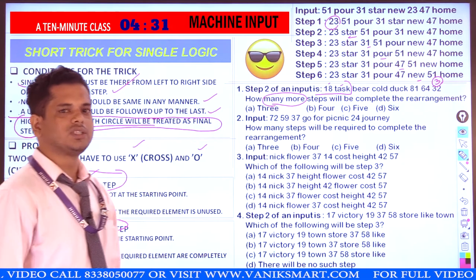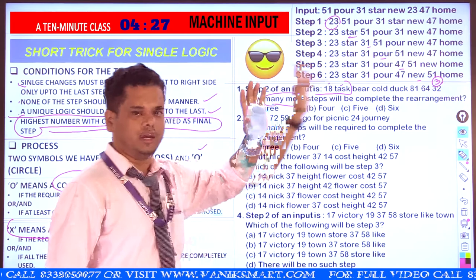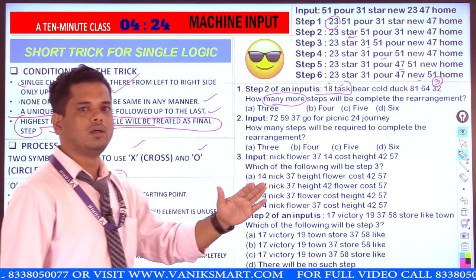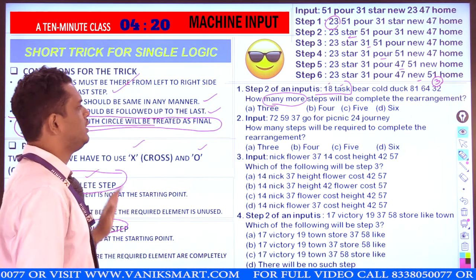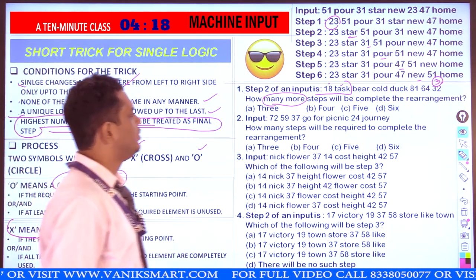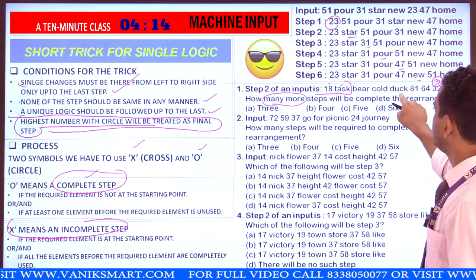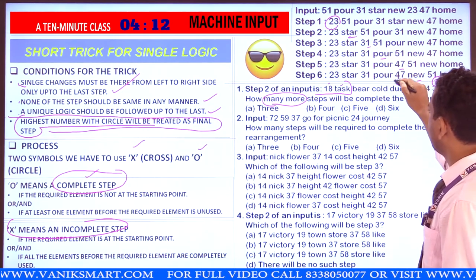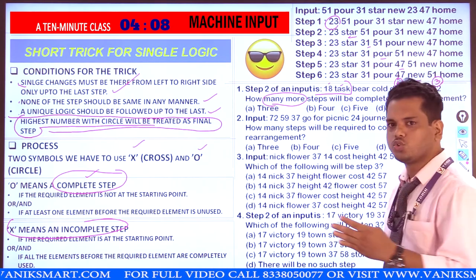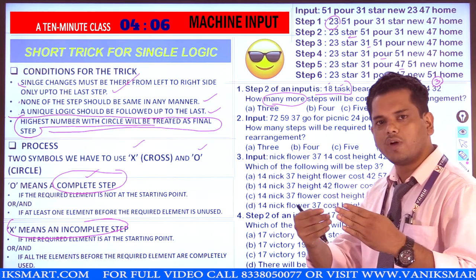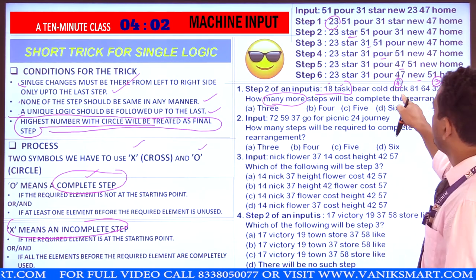The required element is 32 and 32 has not been given in the starting point — that's why this is a complete step and we have covered step number 3. Then after, alphabet: highest alphabet will come first. Here the highest alphabet is 'D' (duck), and it should be at step number 4.